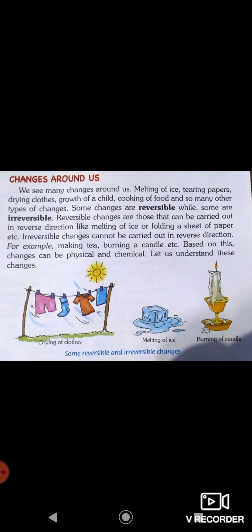Reversible changes can be carried out in reverse direction, like melting of ice. As you can see in this picture, ice melts on getting heat when removed from the freezer. But if we put this melted water back in the freezer, it will convert into ice again. So this is a reversible change — because when conditions are reversed, it returns to its first position.